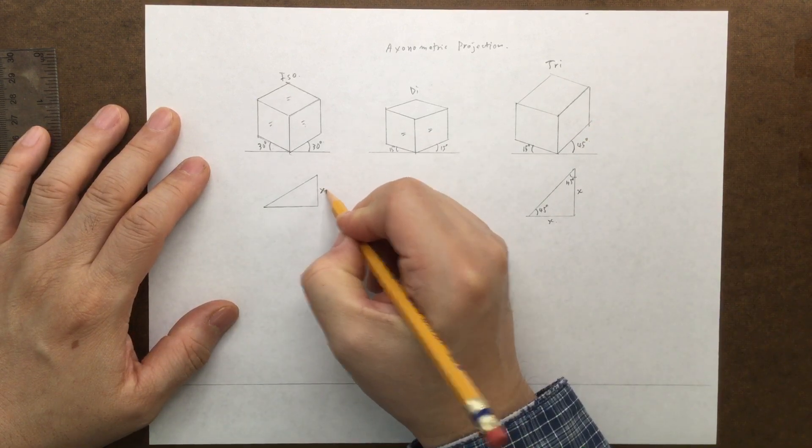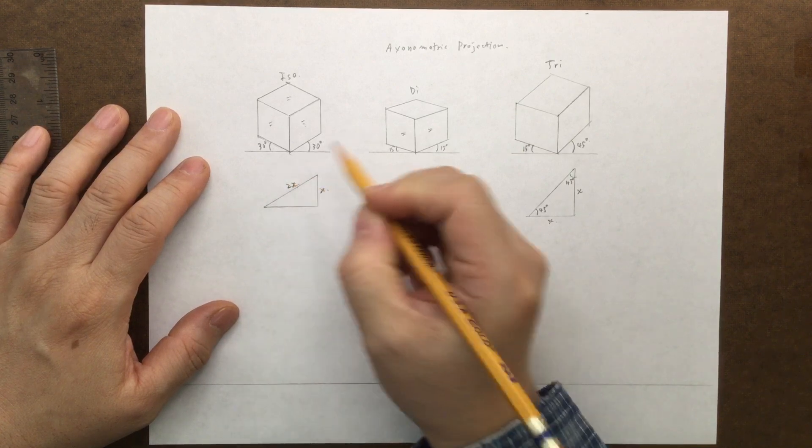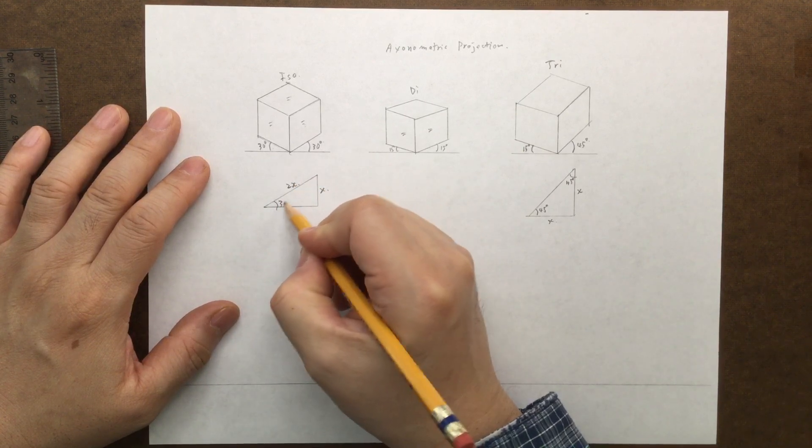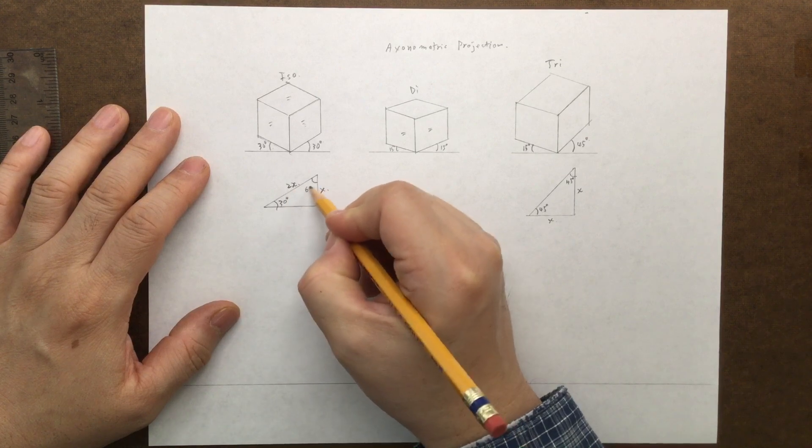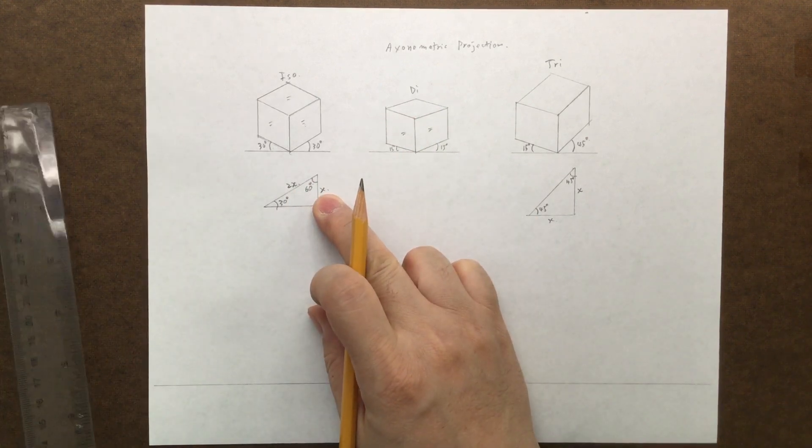This one, if this is x, that's 2x, right? So double the size. So that gives us 30 degrees and 60 degrees. So this one is pretty easy to figure out too.